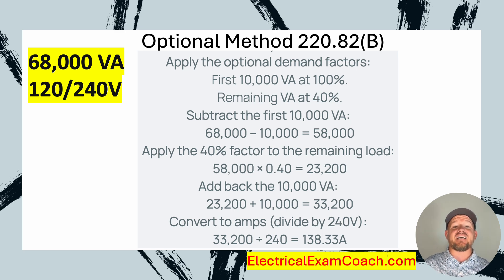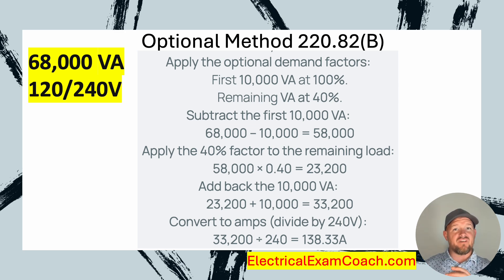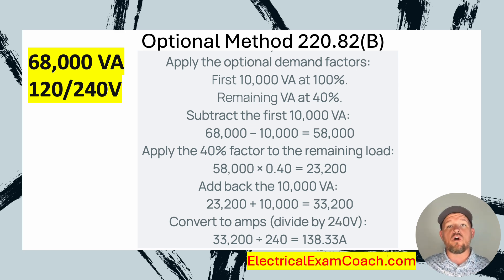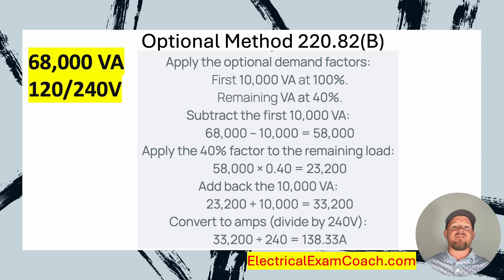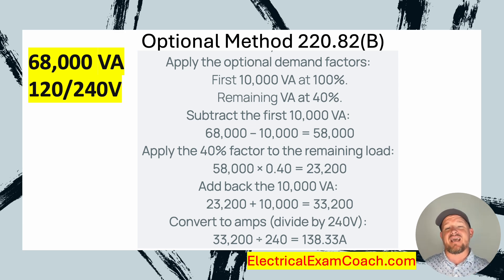I can't forget to add back in the original 10,000. I take 23,200 and add back 10,000, giving me a new reduced load of 33,200 — but that is in watts or VAs. So I take that reduced load and divide it by 240 volts, since this is split-phase single phase, and I end up with 138.33 amps.